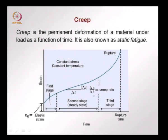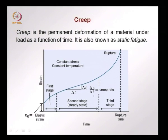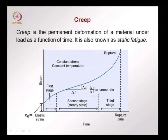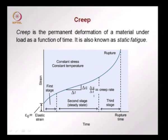Now we move on to another time-dependent failure: creep. In fatigue, the stress is cycled over time; in creep, the stress is kept constant over a long period of time — that is why creep is also called static fatigue, while the previous case is called cyclic fatigue. Creep is the permanent deformation of a material under load as a function of time — the strain continues to increase beyond the elastic or instantaneous part. Most creep curves are defined at a certain constant stress and constant temperature, since temperature also drives creep.